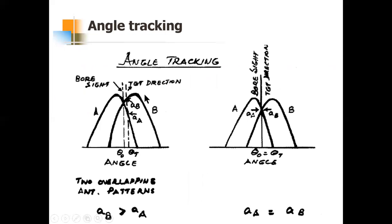Squinted means the two beams are pointing in two different directions — like two eyeballs pointing different ways. Assume these two beams are squinted with a squint angle of plus or minus θq relative to the boresight direction. The boresight direction corresponds to angle θ₀, while θt is the actual target direction. The difference between them is the squint angle θq.